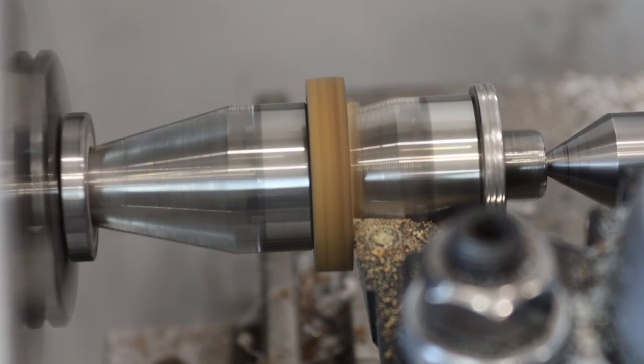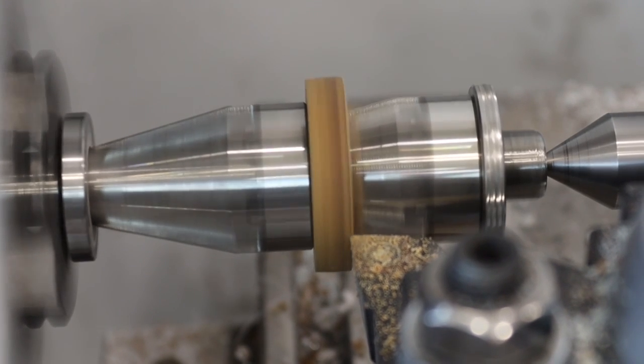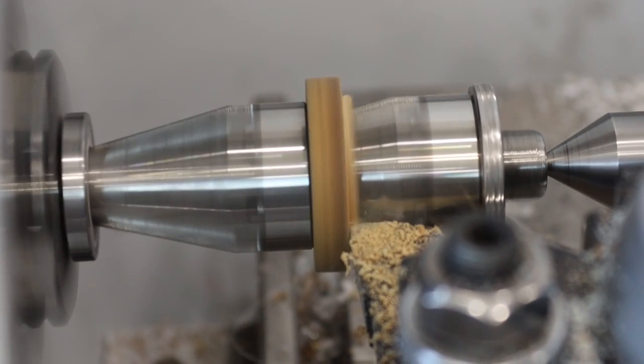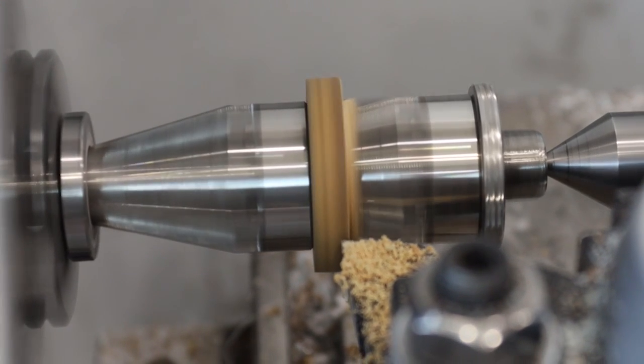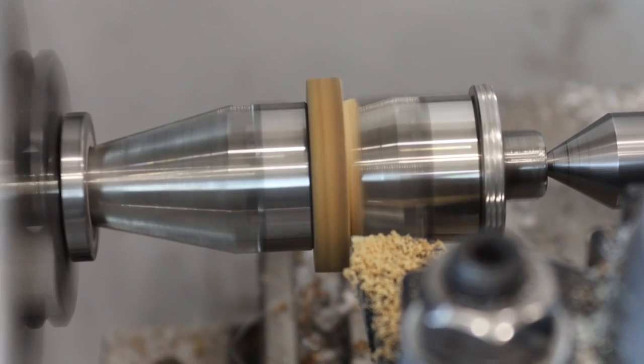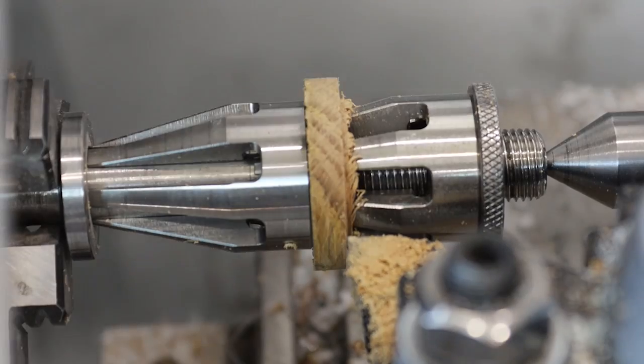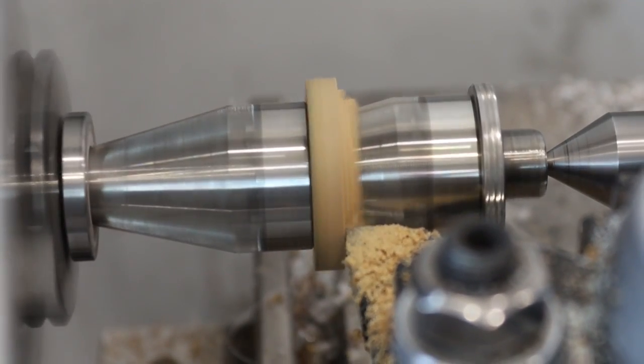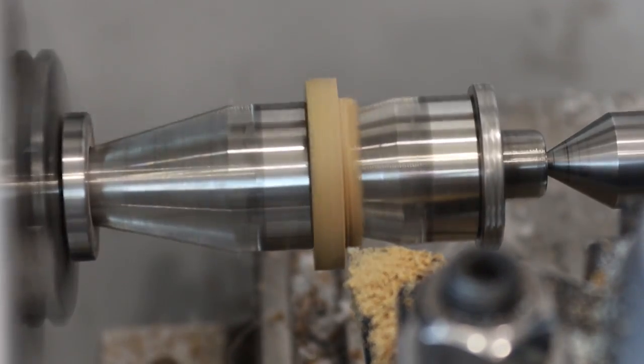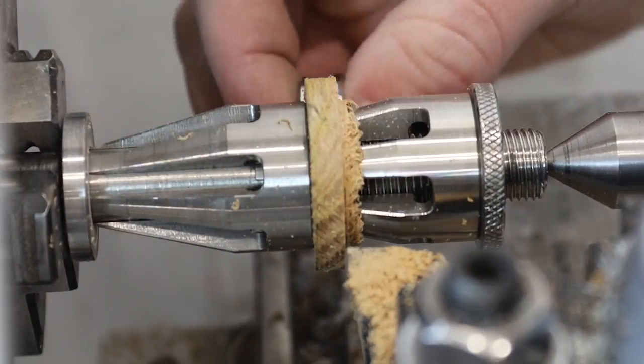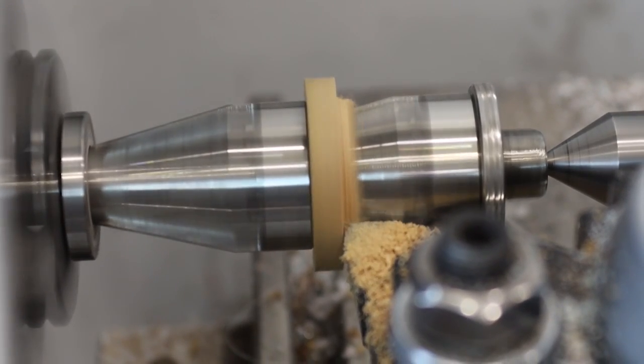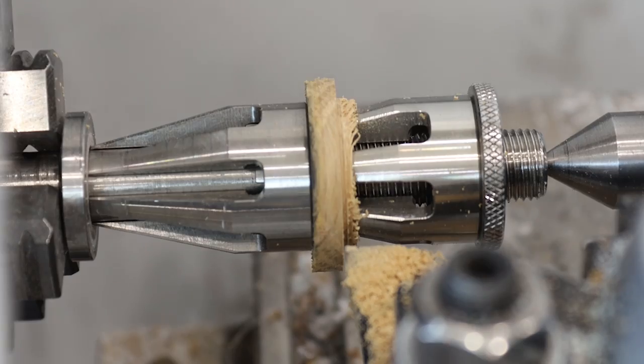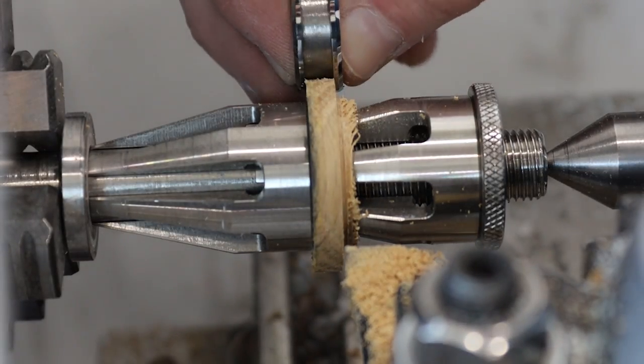From there I take it to the metal lathe, which you could do this on the wood lathe as well. This is an easier way to get this piece of wood exactly five millimeters, super quick, so much faster than sanding. We just go down until we get that tungsten band to fit, and then we'll just sand that little edge off.